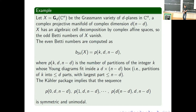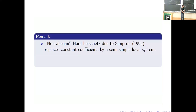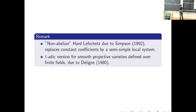Please feel free to interrupt; I may have a tendency to speak fast. There are also other versions of the Lefschetz or Kähler package in what's called the non-abelian setting, where you replace constant coefficients by a semi-simple local system — semi-simple representations of the fundamental group. This was due to Simpson in 1992. There are also versions for varieties defined over finite fields, done by Laumon and others.